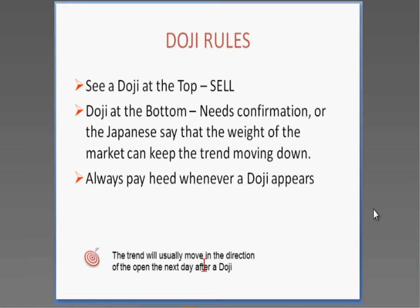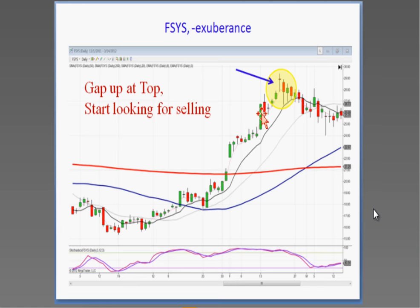When I say 'next day,' that applies to any time frame — whether you're trading off a one-minute, ten-minute, weekly, or monthly chart. Candlesticks are fractal; they work at any time frame. So if I see an uptrend with stochastics in the overbought condition and a gap up in the overbought area, start looking for selling.